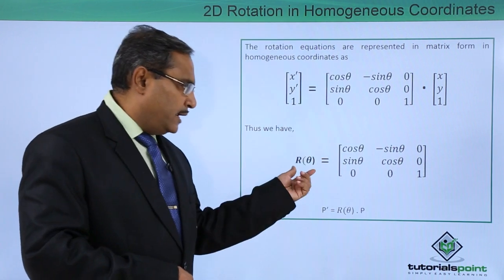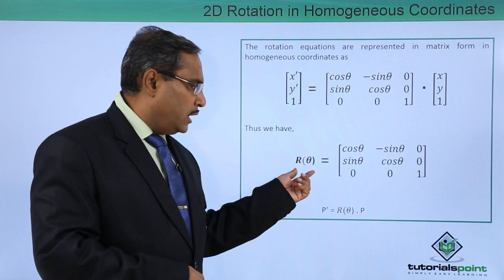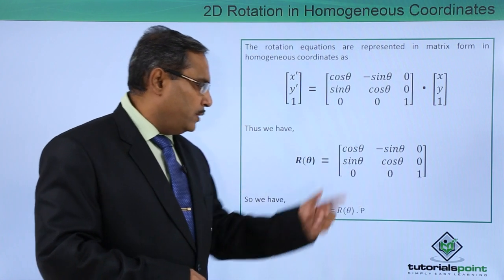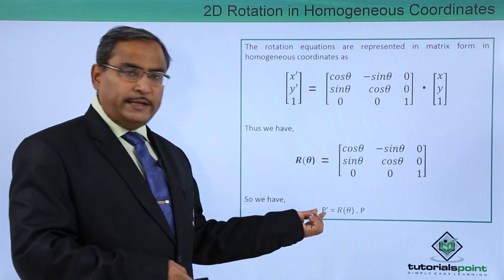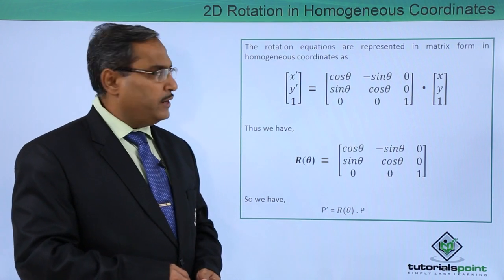Here this can be written as the rotation r of theta. We have written this. This r of theta matrix multiplication with p will give us this p dash as a resultant point.